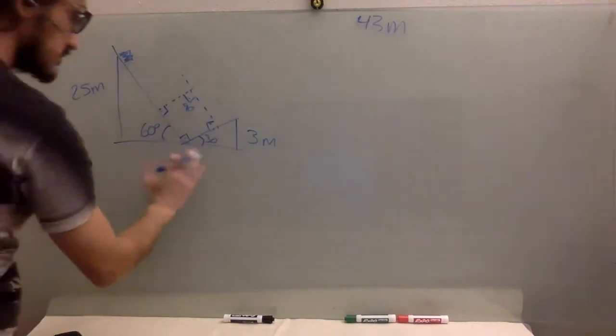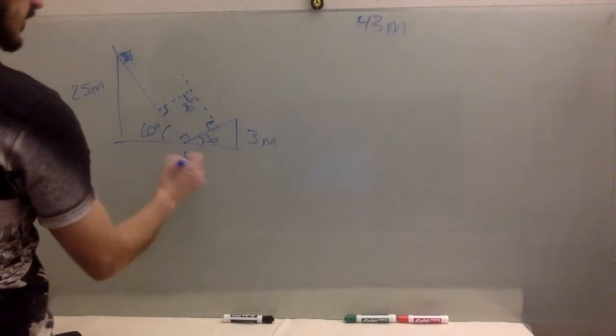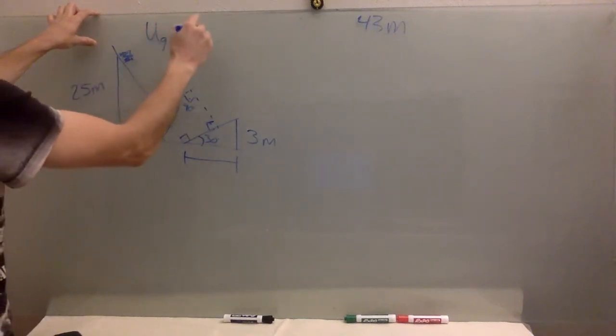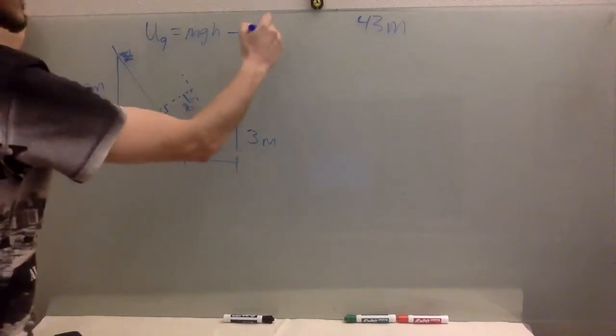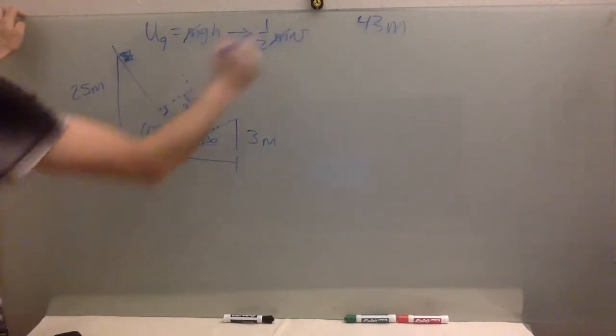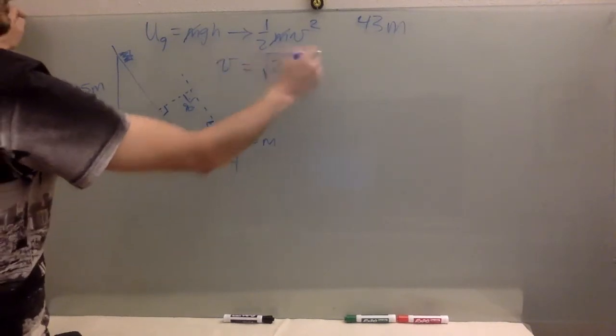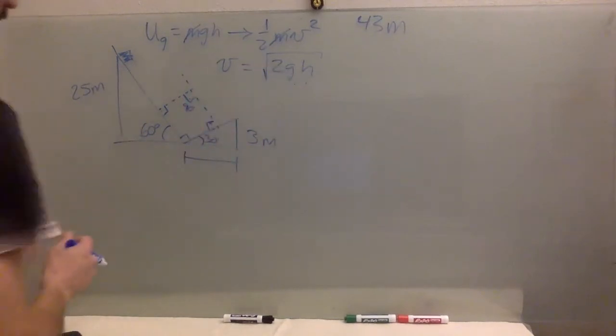So we have set up the problem. Almost. So the other thing that you need to know is this distance. Because what we're going to do is we're going to consider that all this gravitational potential energy is going to go into kinetic at the very bottom. All of it is going to be converted into kinetic.